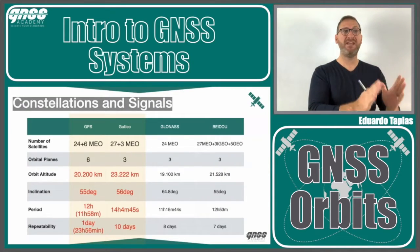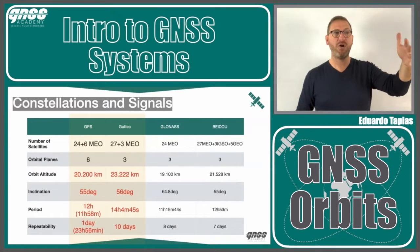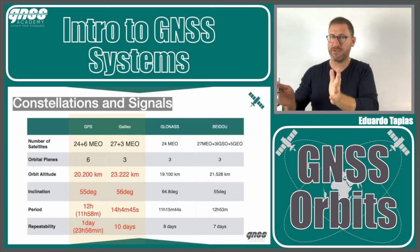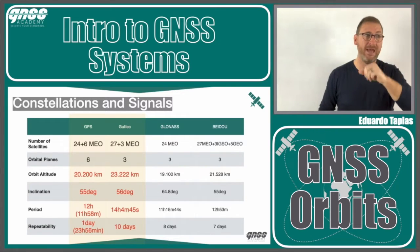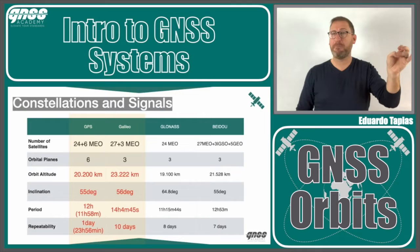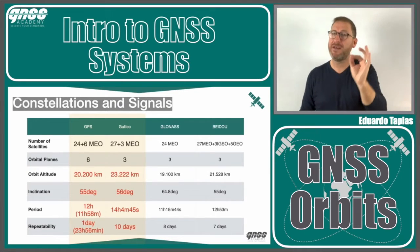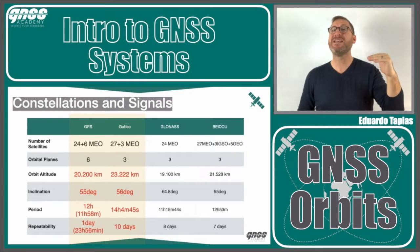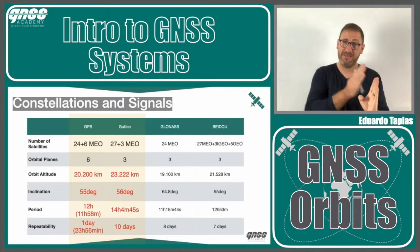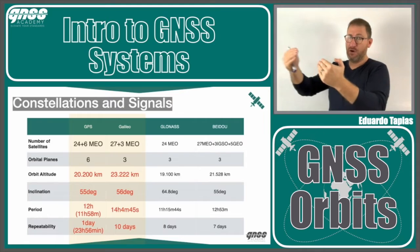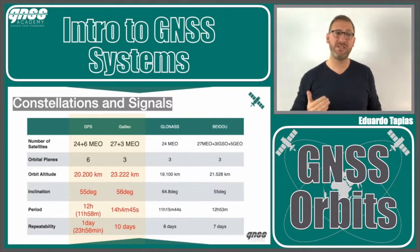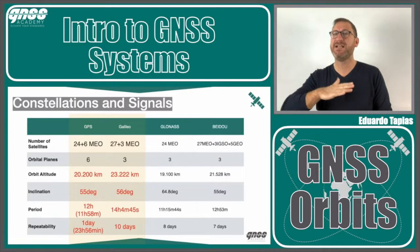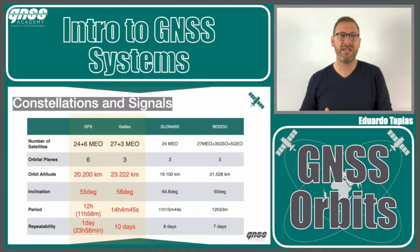If we focus on GPS and Galileo, we have more or less 24 to 27 satellites plus three spares. The difference between GPS and Galileo: GPS has six orbital planes while Galileo has three. The orbit altitude is 3,000 kilometers higher in Galileo, meaning Galileo satellites travel at a lower speed than GPS. Both systems have orbits at 55 to 56 degrees of inclination, which is more or less the same for both.